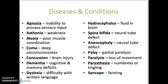Spina bifida is a congenital neural tube deformity where the meninges and sometimes the spinal cord protrude from the vertebral column. Anencephaly is another congenital neural tube deformity affecting the brain, where part or all of the brain is missing.